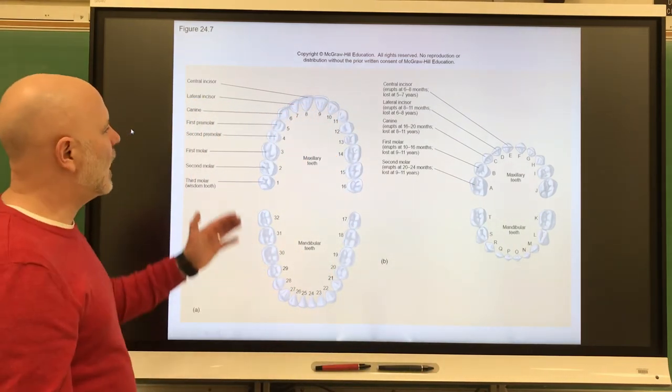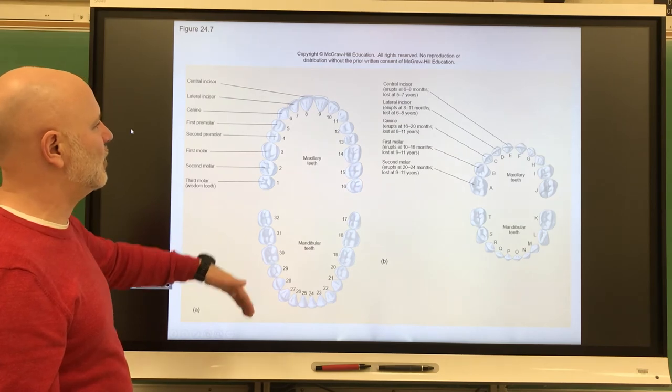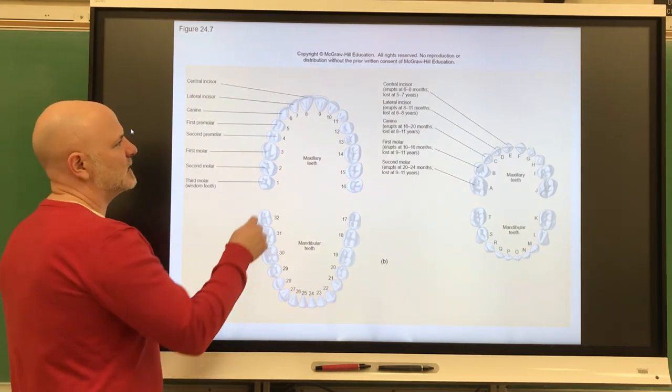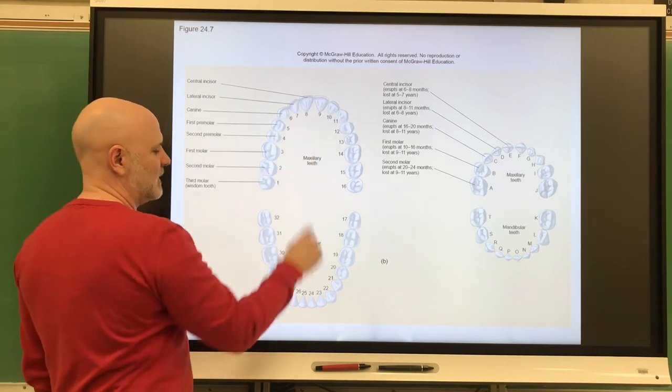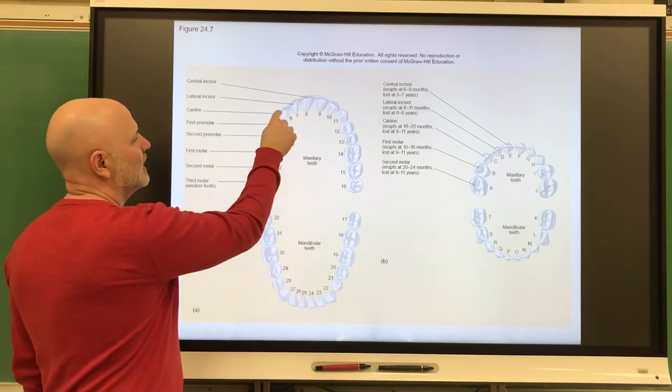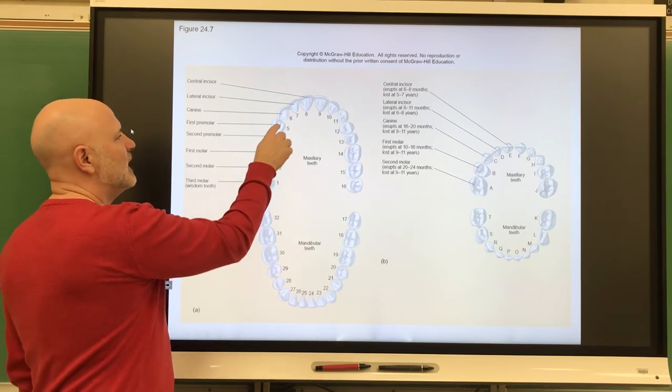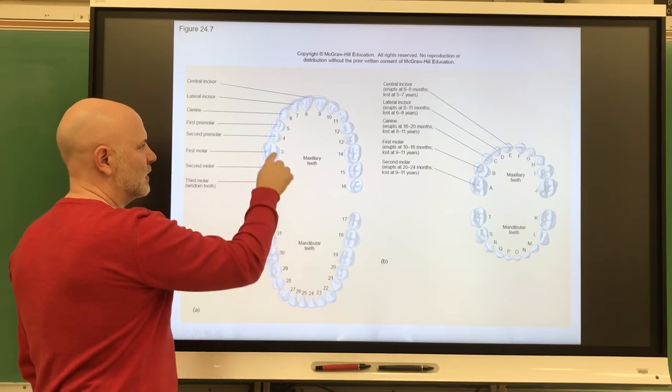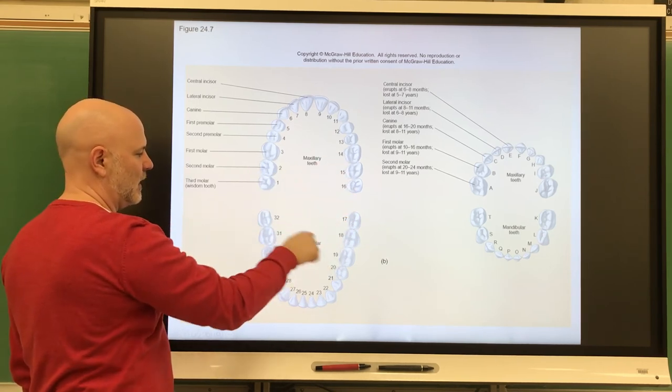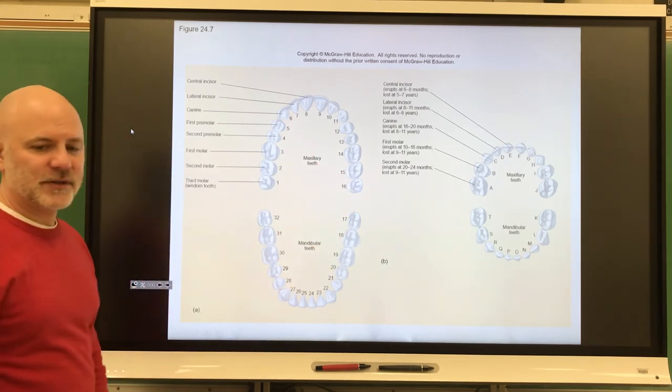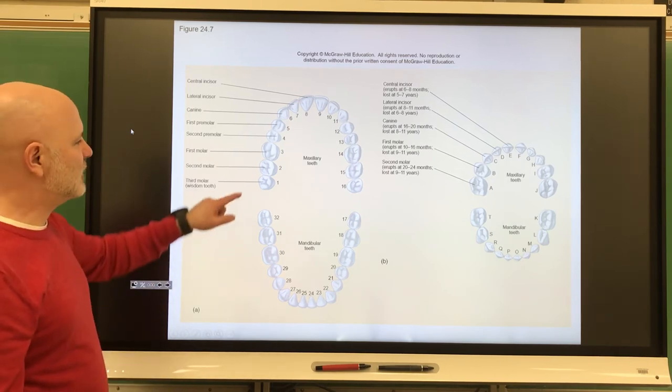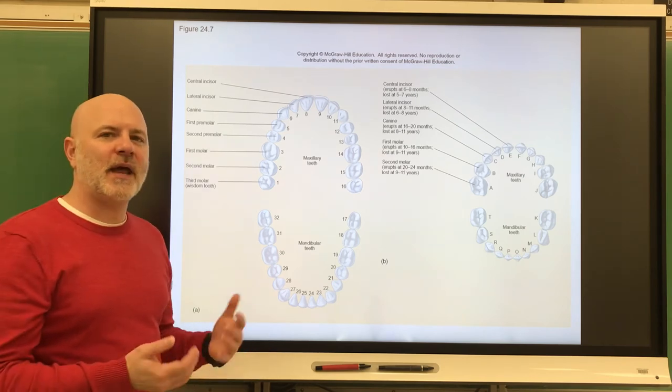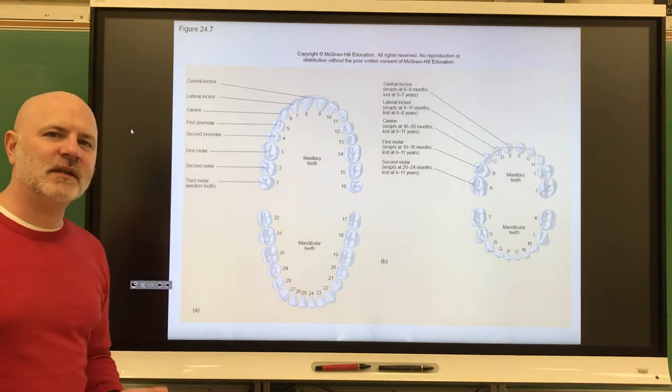So when these fall out, we get these guys here. These are our permanent teeth. We have 32, we can get 32 of these. So we have eight incisors, four on the top, four on the bottom. Next are the canines or cuspids. Now we have premolars or bicuspids. And then the next group there, so it's going to be three here, three here, three here, three there are molars. So the last of those molars are the wisdom teeth. A lot of people have these removed because we typically don't have enough room for all those teeth in our mouth.